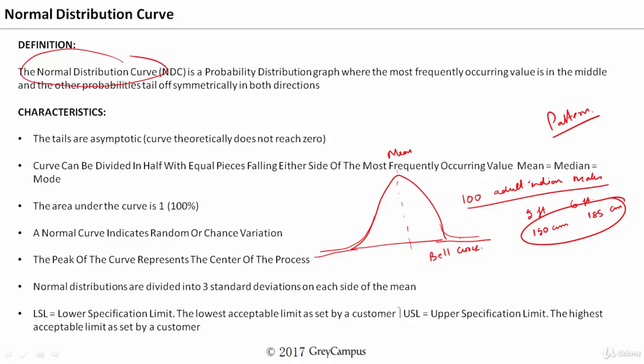If you see the characteristics of normal distribution, it looks like a bell curve. The tails are asymptotic — what do we mean by asymptotic? That means it is not touching the x-axis; it is just running parallel to the x-axis. Both the tails will not touch the x-axis at all; they will meet only at infinity. That's why we call them asymptotic.